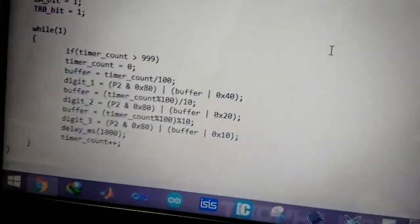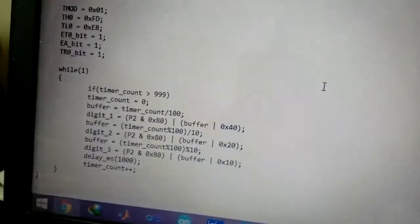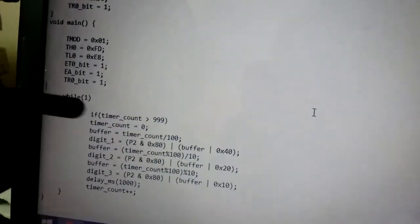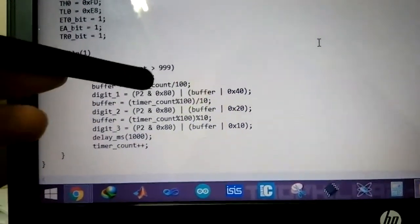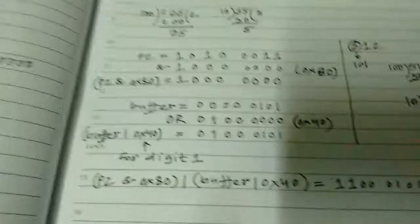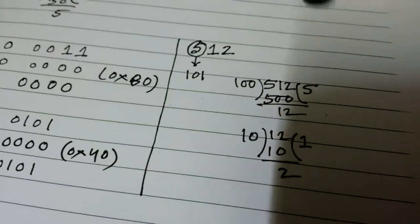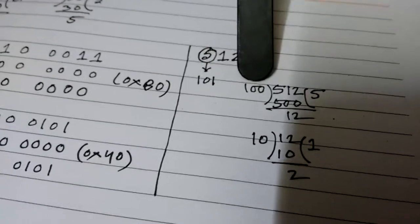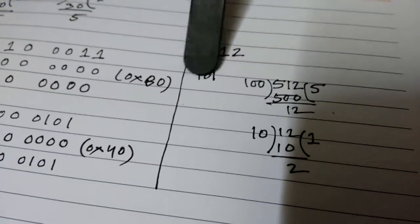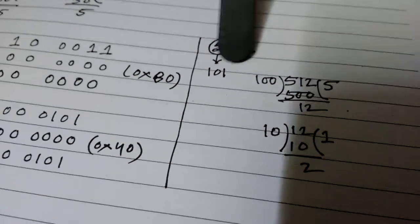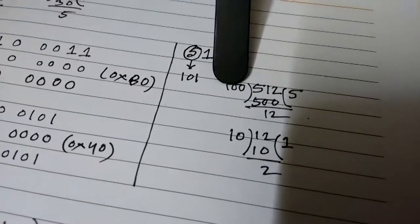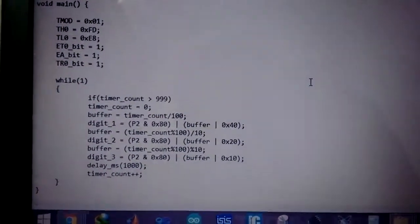In the main program we just set up the timer, 16-bit timer, nothing fancy there. In the while loop, if the value is over 999 it resets to 0. Then buffer equals timer counter divided by 100. That is because, let's say the value we want to show is 512. If we divide 512 by 100 we get 5 as a result, so buffer now contains 5.